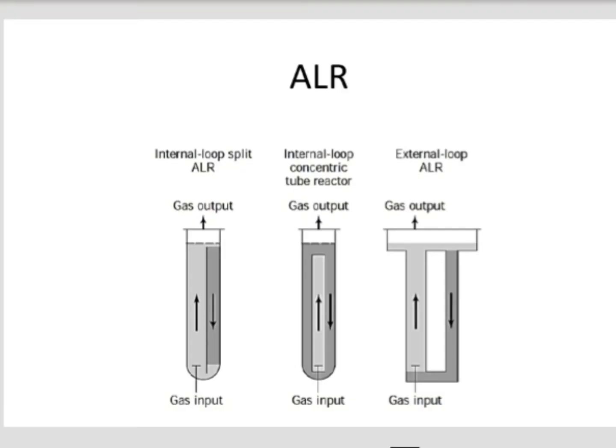This is the diagram of the airlift fermenter. Focus on the third diagram. The fermenter is divided into two zones by a central baffle portion, and these two zones are interconnected. The right zone, shown in a darker color, is the downcomer zone, and the left zone, in a lighter color, is the riser zone. Gas input is fed into the riser zone, and when gas is fed up, the solution from the downcomer zone comes down — indicated by a downward arrow — while the solution inside the riser zone gets raised.